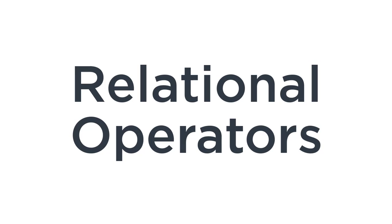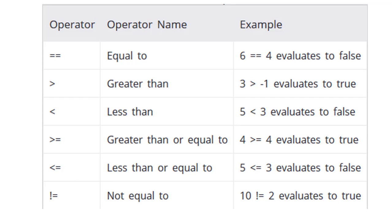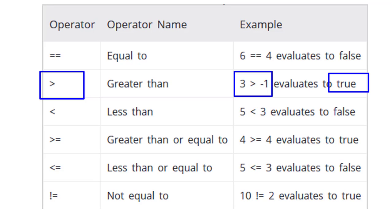Relational operators are used to check the relationship between two operands. If the relationship is true, the result will be true; otherwise it will result in false. We have the equal operator to check if two values are equal, and others like greater than, which checks if a number is greater than another. Relational operators return a bool value, either false or true.